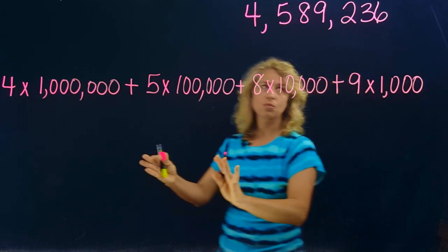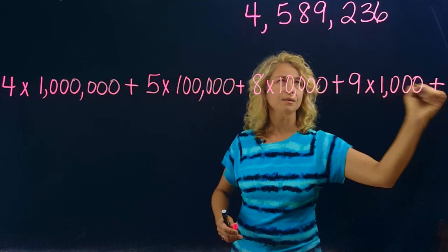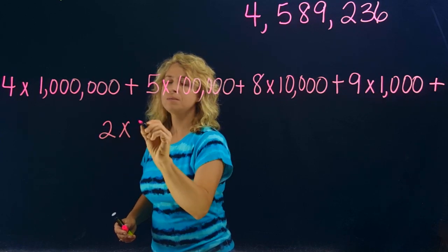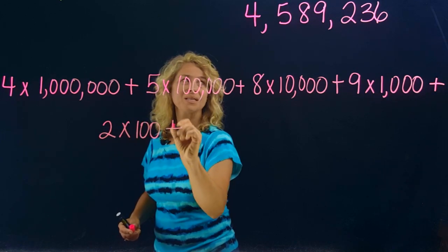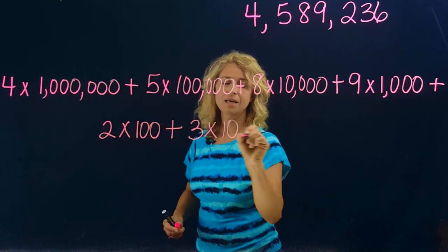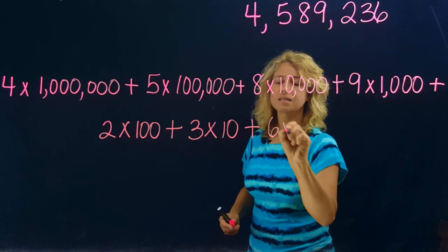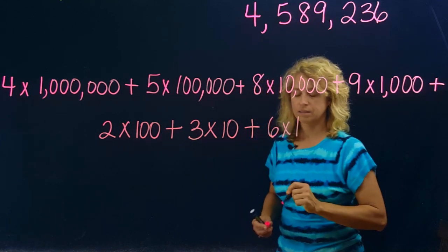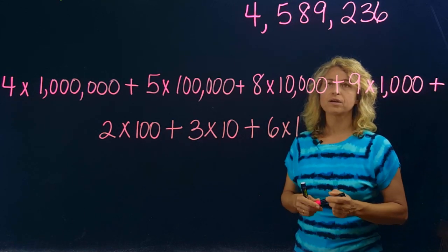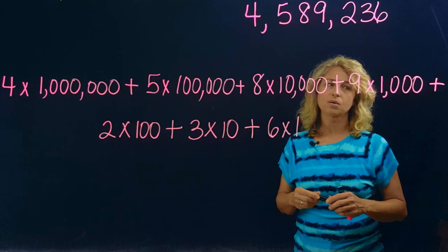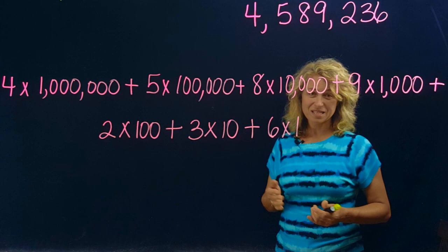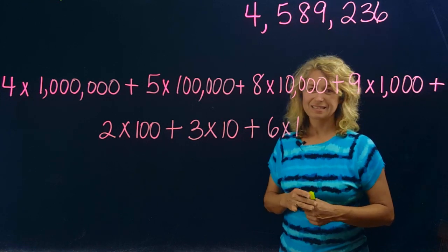Continuing: plus two times one hundred, plus three times ten, plus six times one. That's the expanded form for four million five hundred eighty-nine thousand two hundred thirty-six. This is another way to write and recognize expanded form. I hope you learned something from this lesson — thanks for watching!